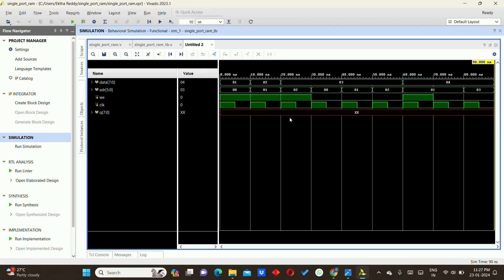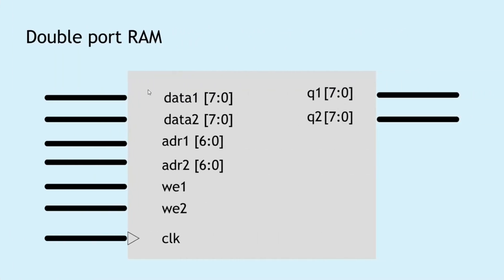Now we will see the dual port RAM. This is the block diagram for it. The input values are data1, data2, address1, address2, write enable 1, write enable 2, and a clock signal. The outputs are Q1 and Q2. Again we are going to have 128 locations by 8 bit, and two independent access ports — that is why we have data1 and data2, address1 and address2, write enable 1 and 2, and Q1 and Q2.